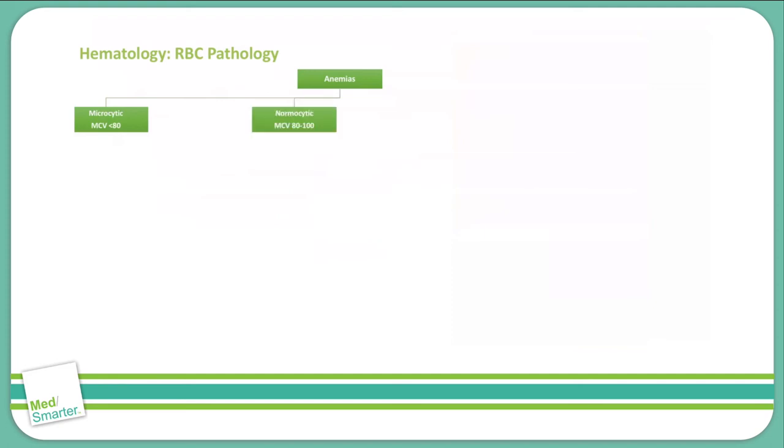You have a normocytic anemia, where you see a normal size of the red blood cells, where their MCV is between 80 and 100, and then we have macrocytic anemia, where that MCV is greater than 100. Let's talk about each individual one here a little bit closer.